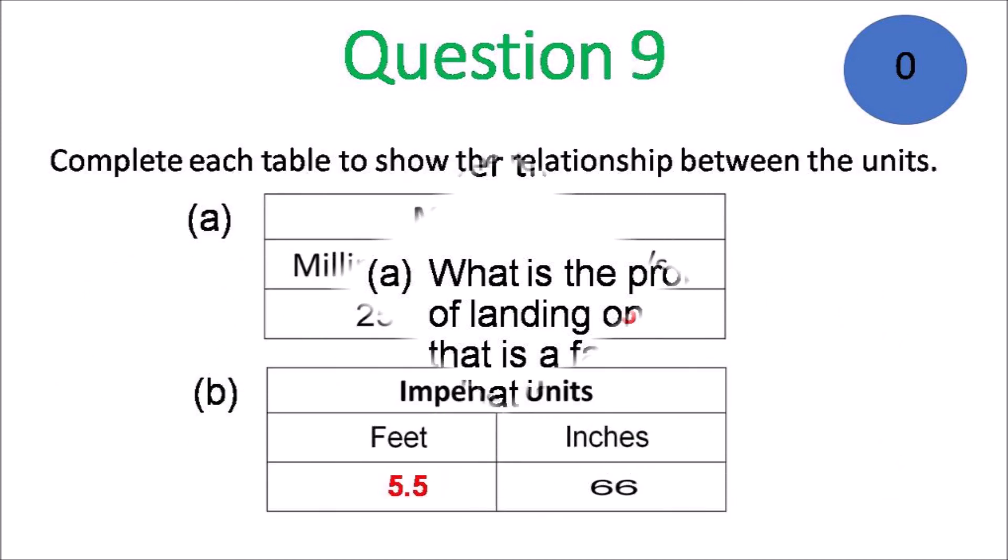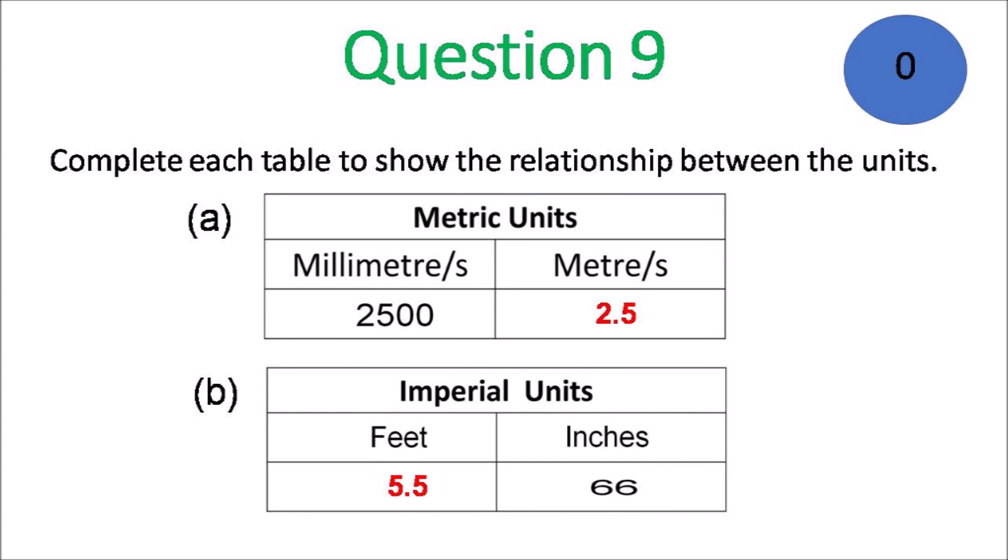Question 9. 2,500 millimeters is 2.5 meters and 66 inches divided by 12 is 5.5 feet.